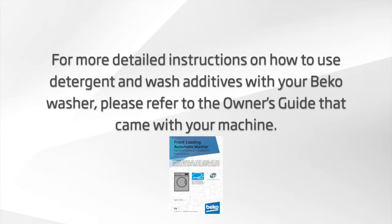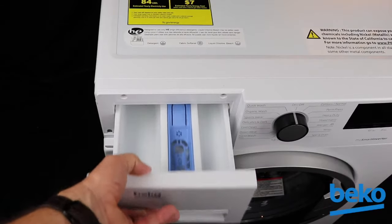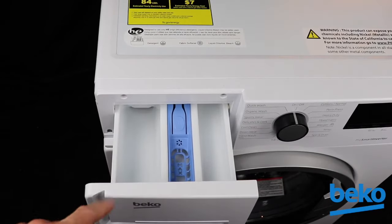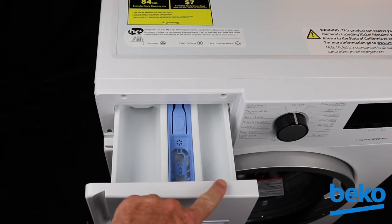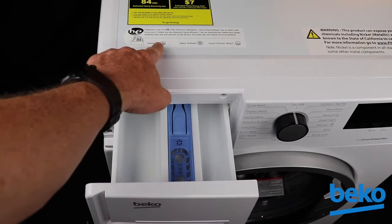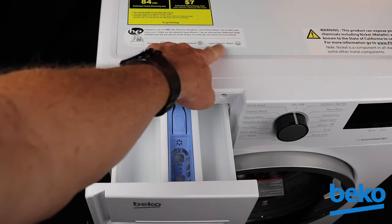For more detailed instructions on how to use detergent and wash additives with your Beko washer, please refer to the owner's guide that came with your machine. Beko washers have three compartments in their dispensers. Each compartment is marked with a specific icon, and a sticker on the top panel explains the function of each compartment.